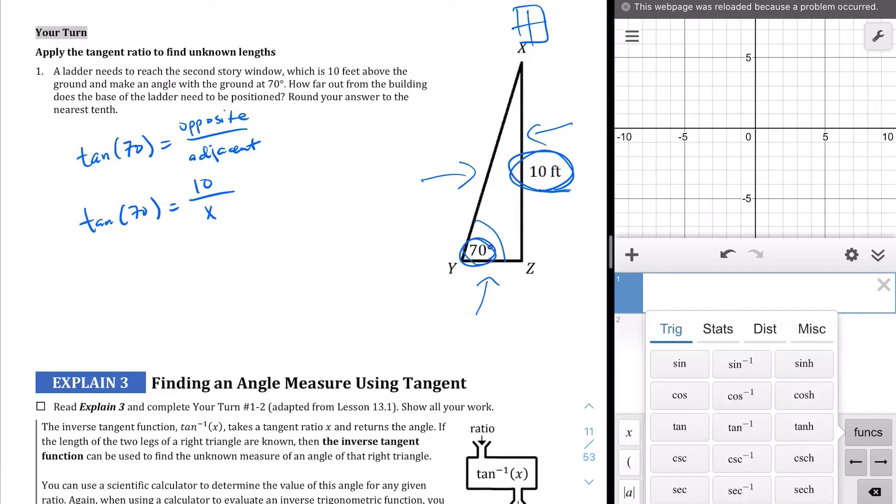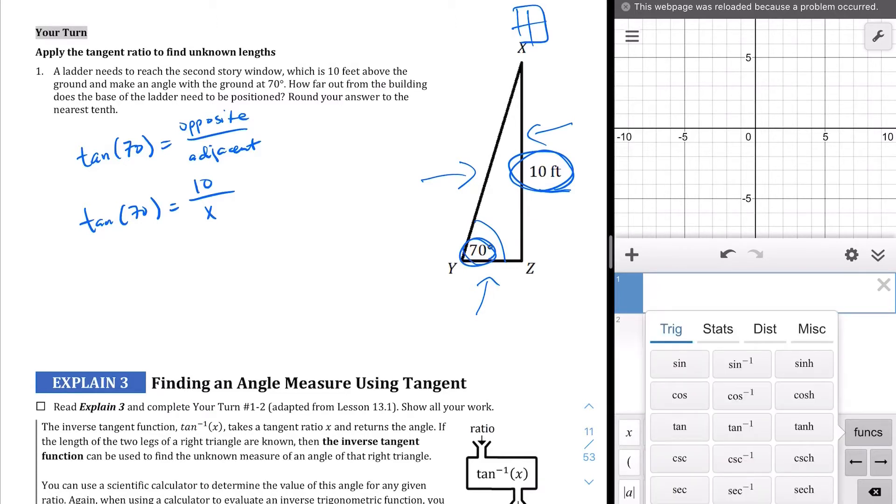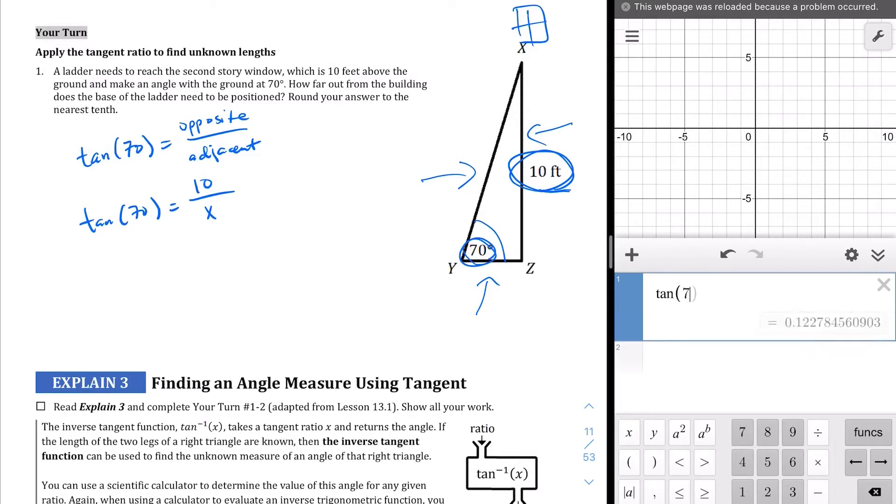Once you have that set, you're going to be looking for the tangent of 70. In the Desmos calculator, the tangent function is hidden in this function tab right here at the bottom. Make sure you're at the trig section. We're going to tap on tangent, and we're going to type in 70, the tangent of 70. You should see here that the tangent of 70 equals 2.747474. We're going to round that up to 2.75. So the tangent of 70 is going to be 2.75-ish, and that's going to equal 10 over x.